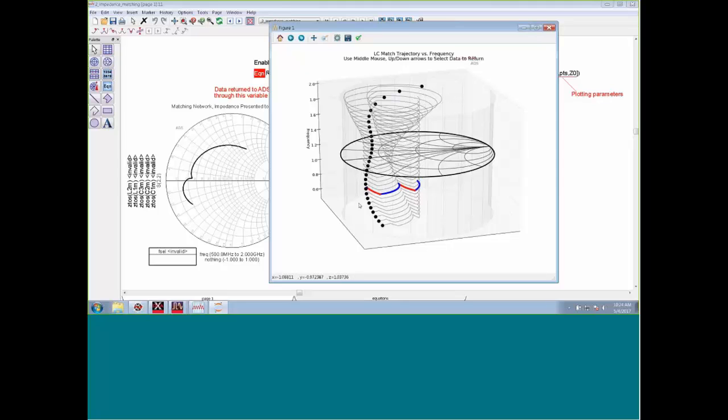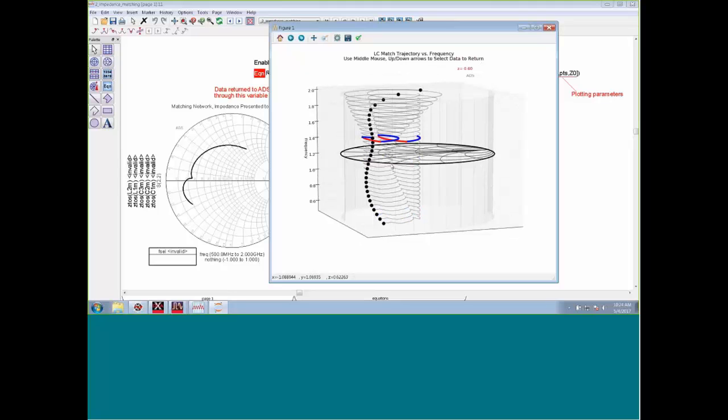By the way, one of the things I've got in this library is the ability to make a marker. You can put a marker on the data. I'm using my keyboard arrows right now and just kind of toggling the response up and down. I can also use the middle mouse button too. That will allow me to kind of select data on this Smith chart.